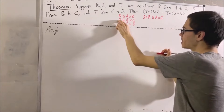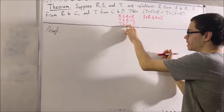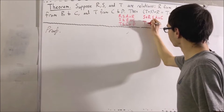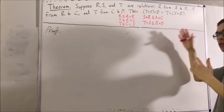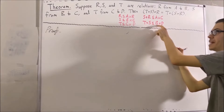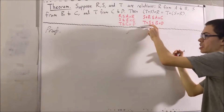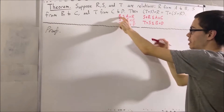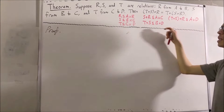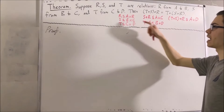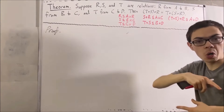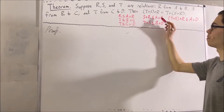Similarly, since s is a relation from B to C and t is a relation from C to D, we have that t ∘ s is a relation from B to D. Taking this a step further, notice that r is a relation from A to B and t ∘ s is a relation from B to D. So, (t ∘ s) ∘ r is a relation from A to D. Similarly, s ∘ r is a relation from A to C and t is a relation from C to D. Therefore, t ∘ (s ∘ r) is a relation from A to D.